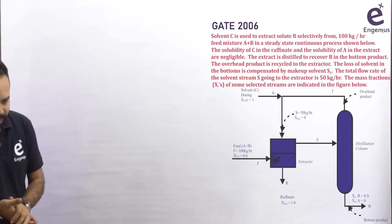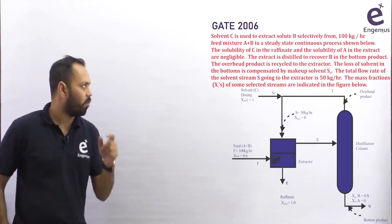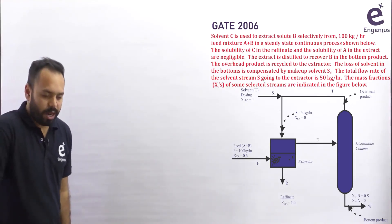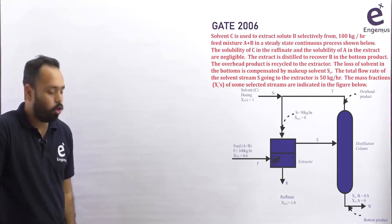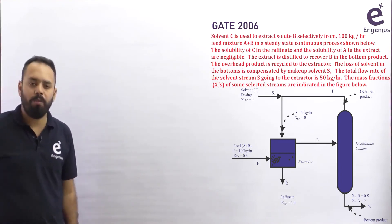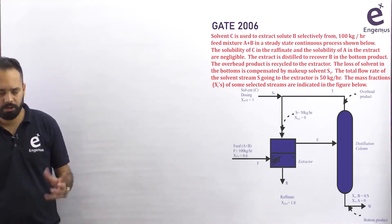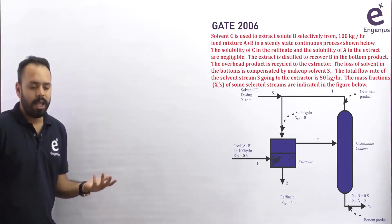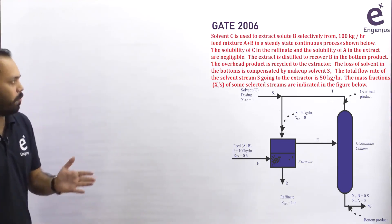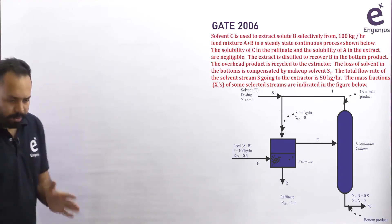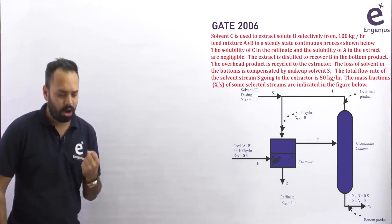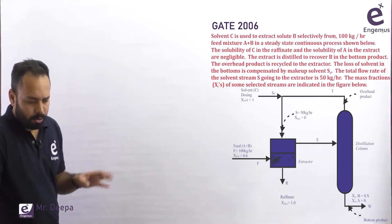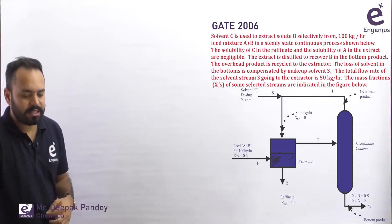The next problem is on the screen. This problem is from GATE 2006. Solvent C is used to extract solute B selectively from 100 kg per hour of feed mixture of A plus B in a steady state continuous process. The solubility of C in the raffinate and the solubility of A in the extract are negligible — this line is important, we'll talk about this.